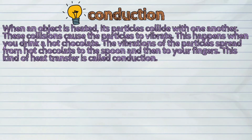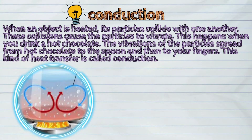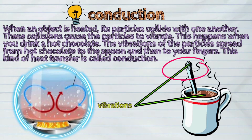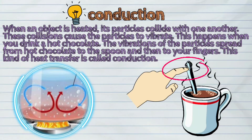When an object is heated, its particles collide with one another. These collisions cause the particles to vibrate. This happens when you drink hot chocolate — the vibrations of the particles spread from the hot chocolate to the spoon and then to your fingers. This kind of heat transfer is called conduction.